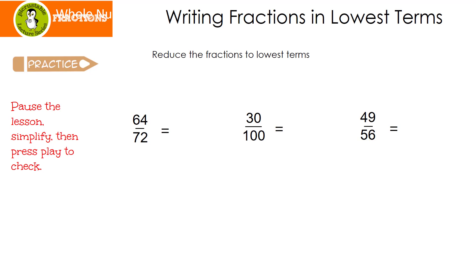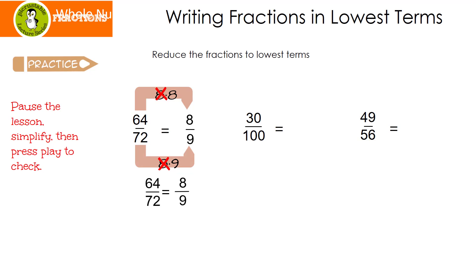All right, let's see how you did. When I think of 64, I think of 8 times 8. It just so happened that 8 times 9 is 72. When I cancel out my common factor, I end up with 8 over 9. 8 over 9 doesn't reduce anymore, so 64 over 72 equals 8 over 9. Some of you may have started to divide by 2 — that's perfect. You just keep dividing till you end up with 8 ninths.